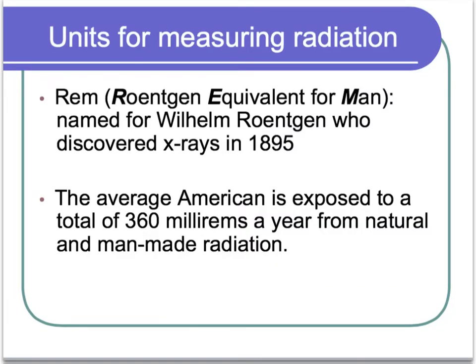When we're measuring radiation, we use specific units — just like for mass we use grams or pounds. For radiation, we use what we call REMs, which is short for roentgen equivalent for man. It's named after Wilhelm Röntgen, who discovered x-rays back in 1895.